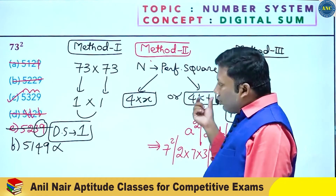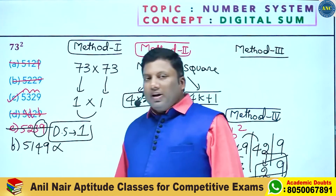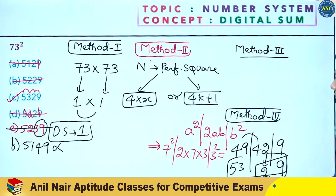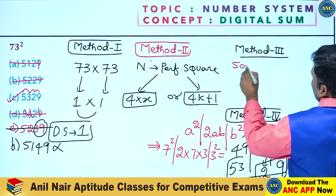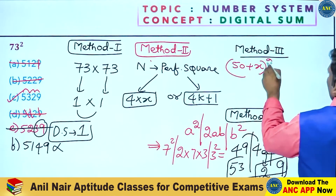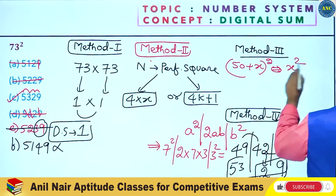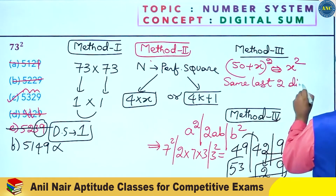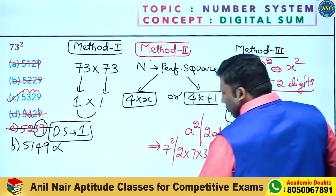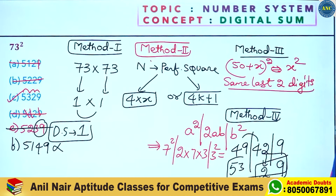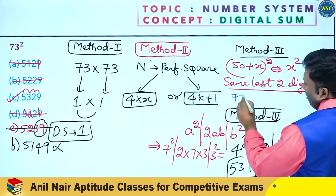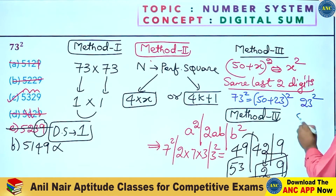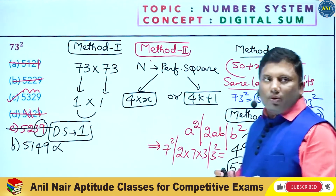Method 3: (50 plus x) whole square and x square share the same last 2 digits. So 73 whole square is (50 plus 23) whole square. Last 2 digits come from 23 squared, which is 529 — last 2 digits 29. So 5149 is wrong.